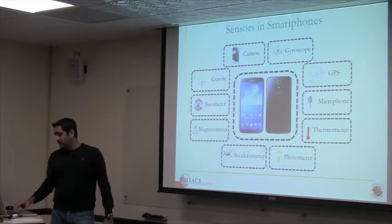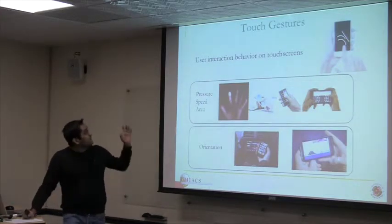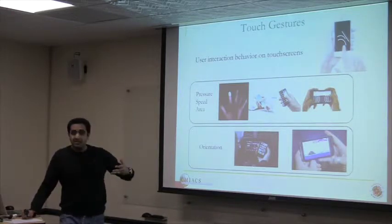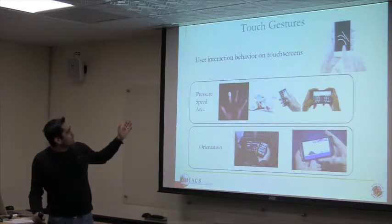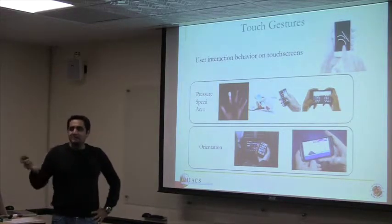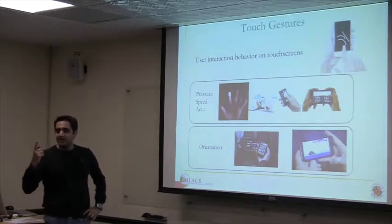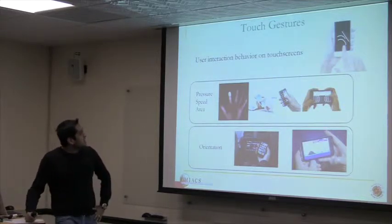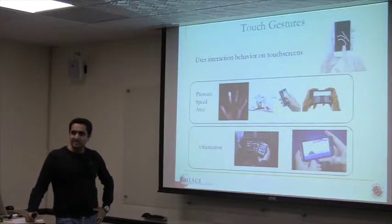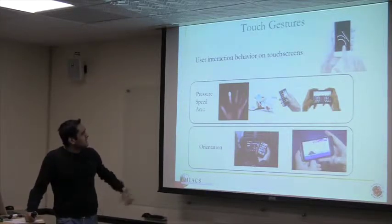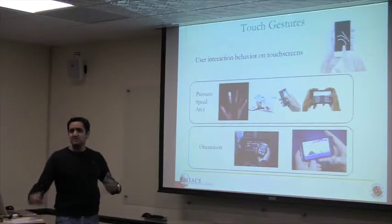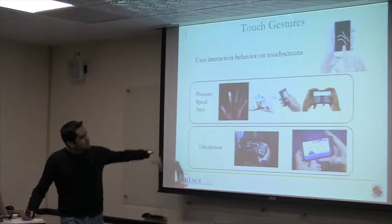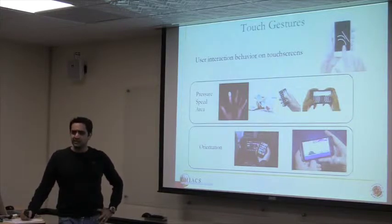One thing we can do is view how users interact with the phone based on how they behave on the touch screen. For instance, Sianthan swipes differently than I do — his finger area is different, and the amount of pressure he applies while swiping is different. Orientation is useful too, because some people prefer portrait mode and some prefer landscape. We can use all this information to extract features for continuously authenticating users.